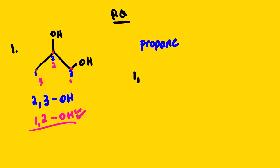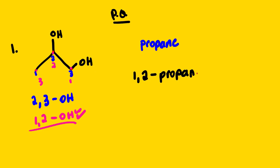Combining the two positions, we get 1,2 — so it's 1,2-propane-diol. Remember that we have two of them, so we have to show that within the IUPAC name. It will be propane-1,2-diol. The suffix 'diol' represents the number of hydroxy groups we have. Remember that 'di' in chemistry shows that we have two.